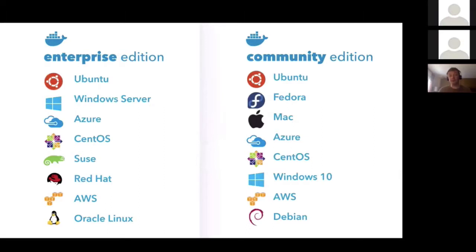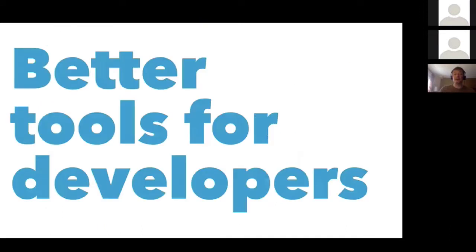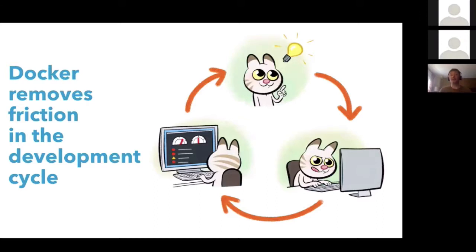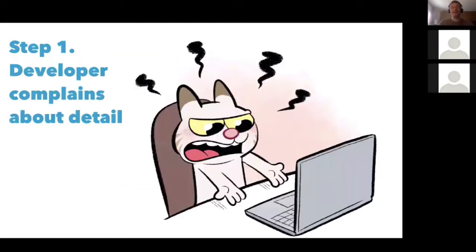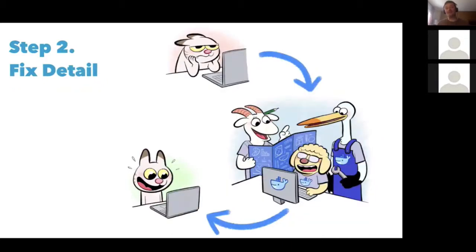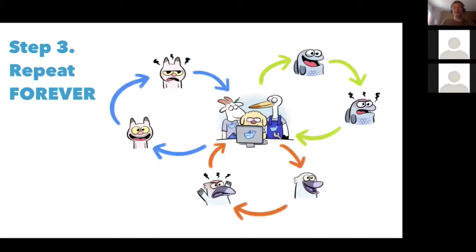In order to make that happen, we build community and enterprise editions running on different platforms. People can run Docker on their Mac or Windows, but also on Azure, Amazon, or Google Cloud. We're trying to build better tools for developers, removing friction in the development cycle. We have a very secret process for that: three easy steps. The first step is a developer complains about a detail. Second step, we listen — they send issues on GitHub or ping us on Twitter. We listen, we fix the detail, and then we iterate.